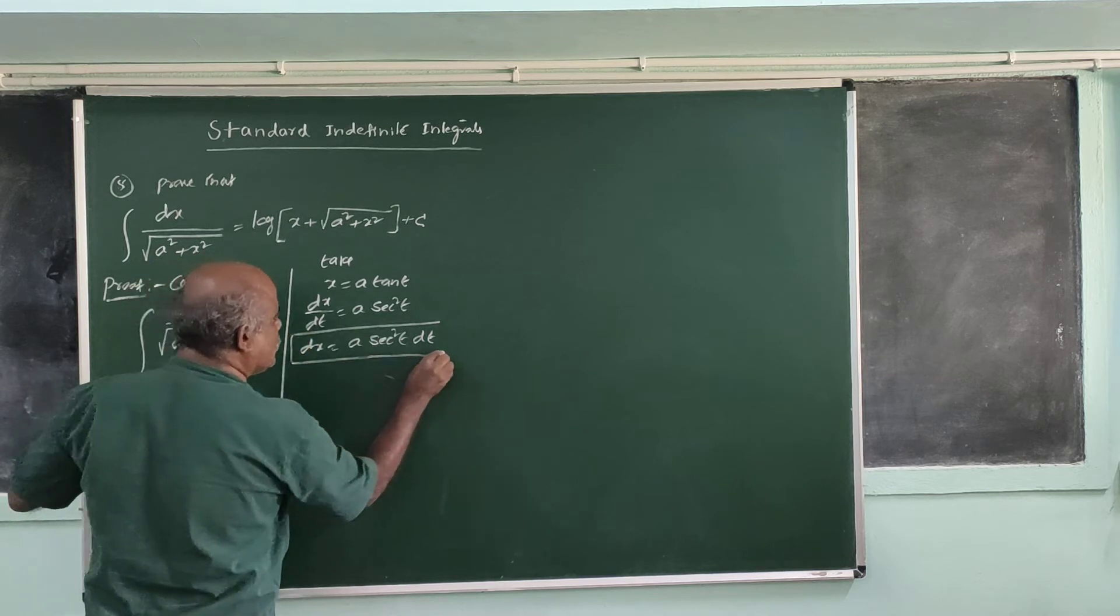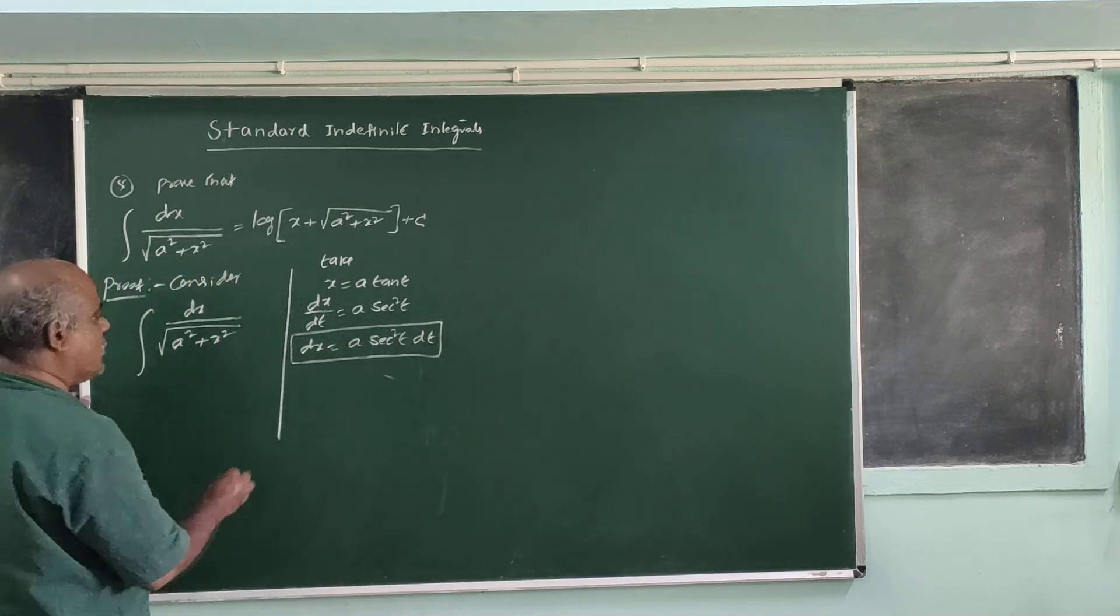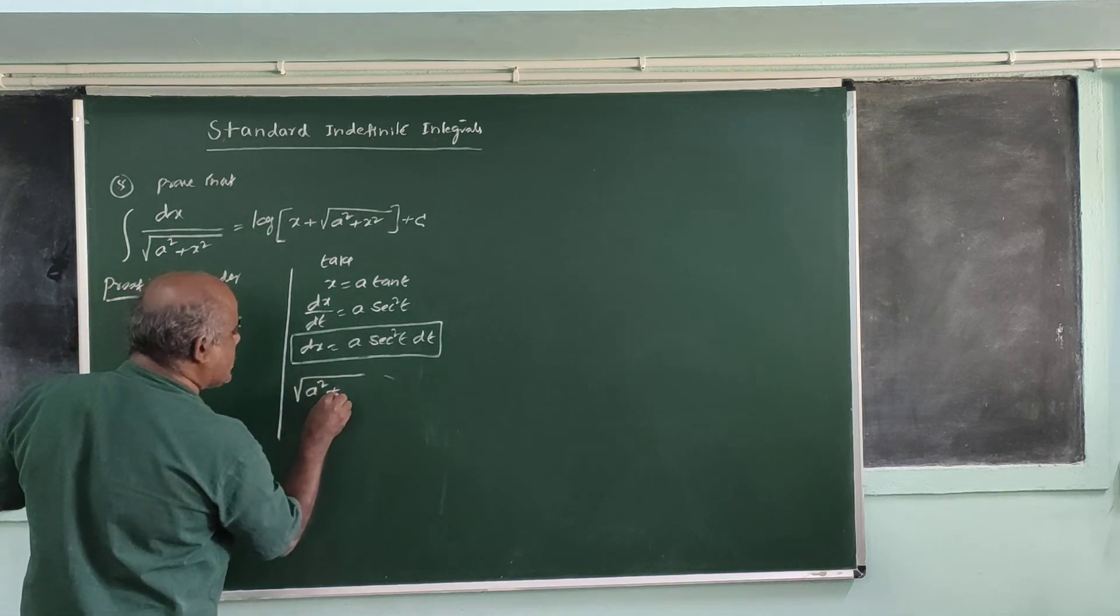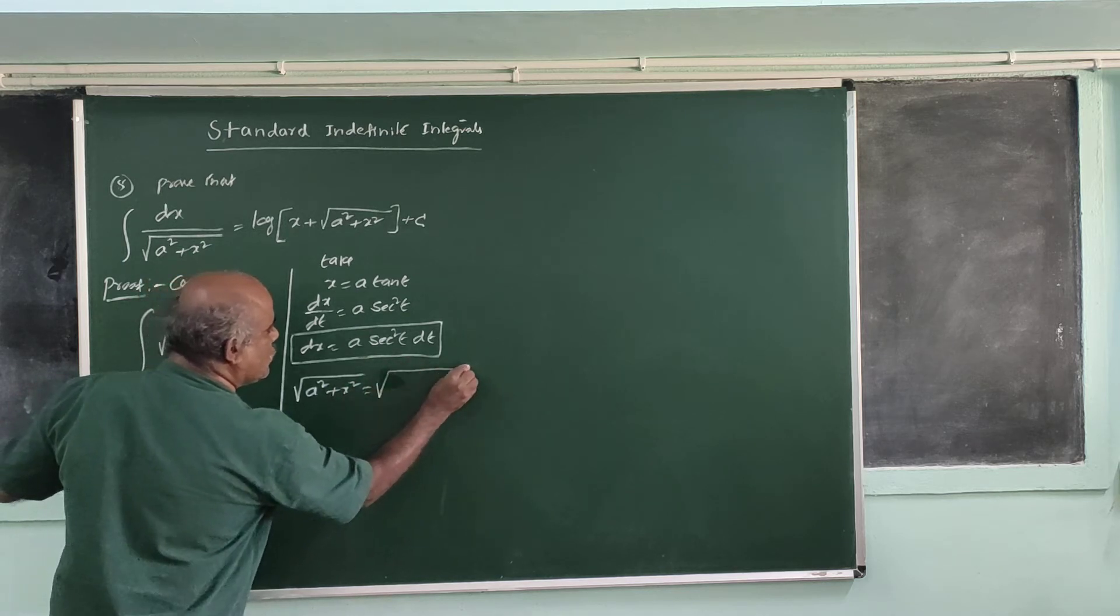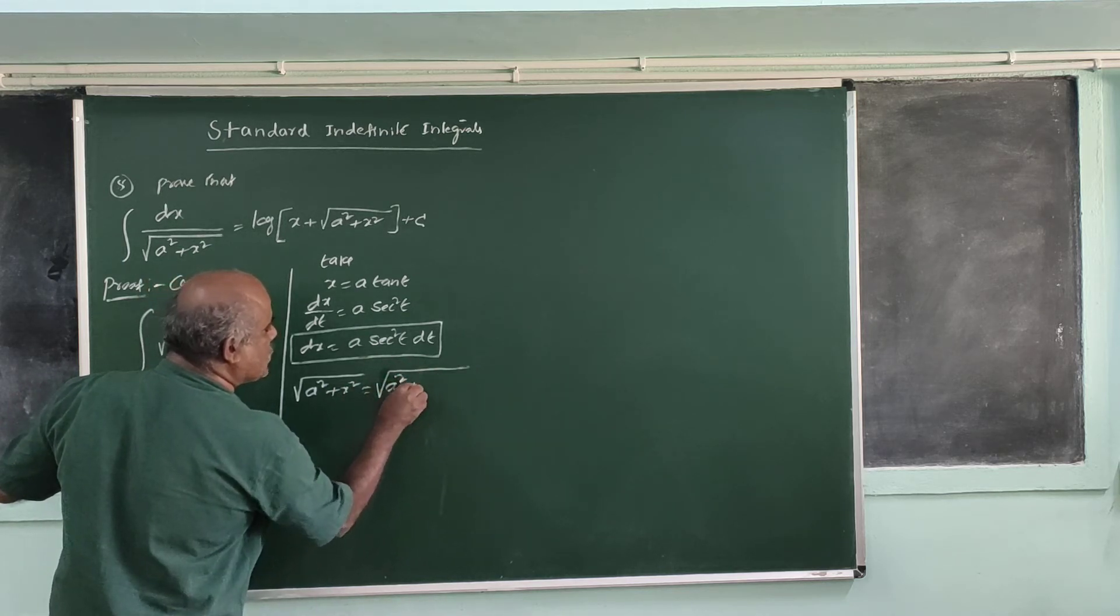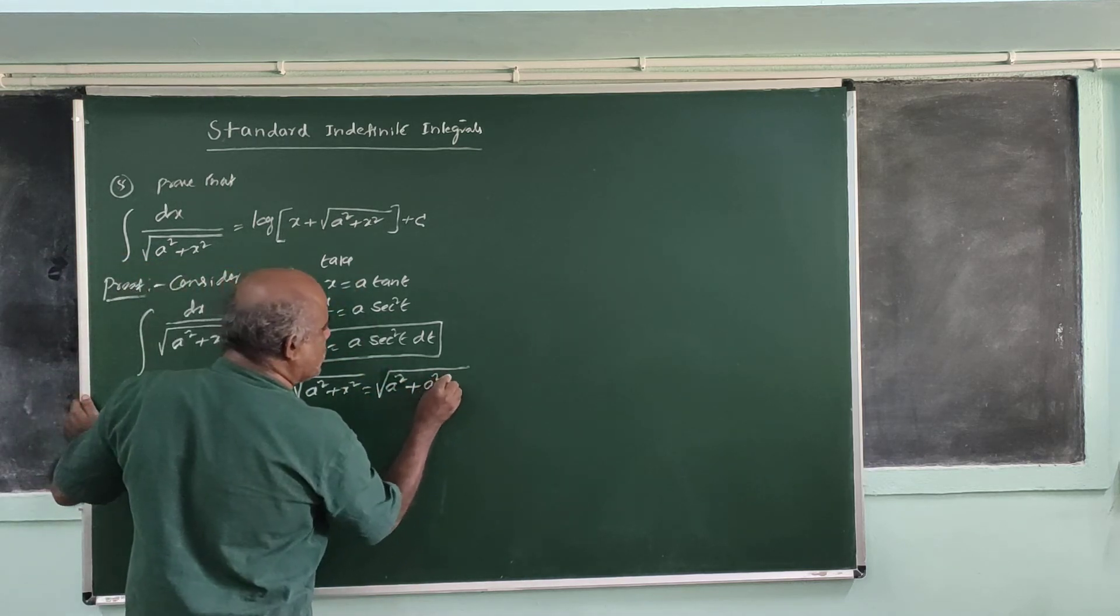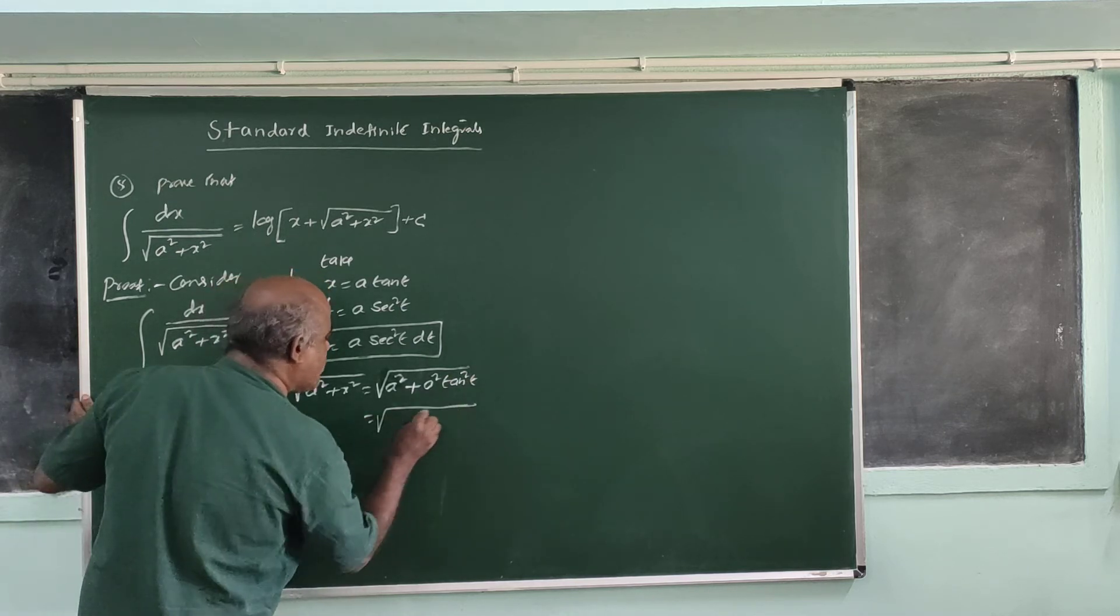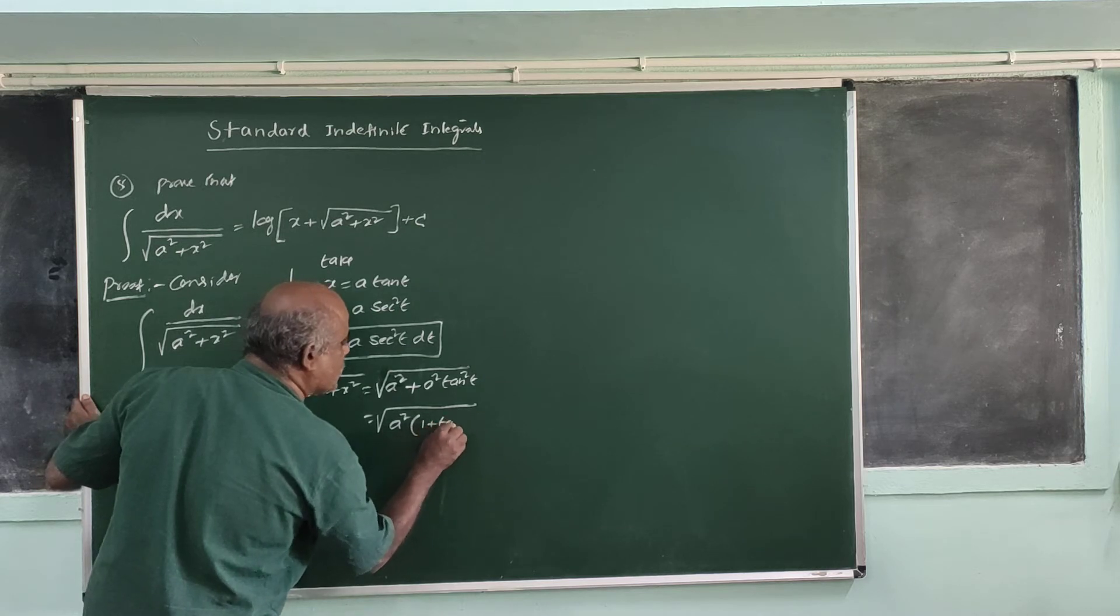In the denominator, we have root of a squared plus x squared, which equals root of a squared plus a squared tan squared t, which equals root of a squared times 1 plus tan squared t.